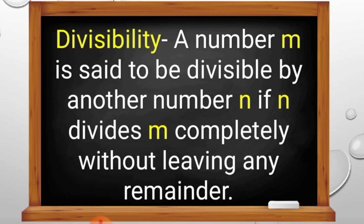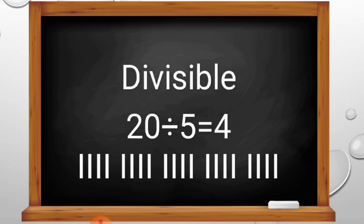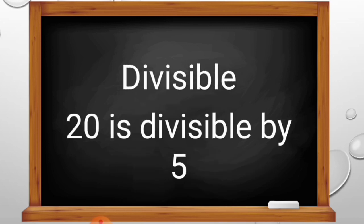Before we get started, let us first define what divisibility is. A number m is said to be divisible by another number n if n divides m completely without leaving any remainder. For example, if we divide 20 by 5, the answer is 4. Take note, there is no remainder. Therefore, we can say that 20 is divisible by 5.